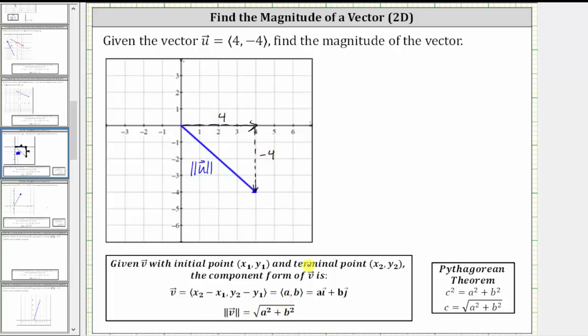And then using our formula here below, the x component is a and the y component is b, which means the magnitude of vector u is equal to the square root of a squared plus b squared, which in our case is equal to the square root of four squared plus the square of negative four. Simplifying, we have the square root of 16 plus 16, which is equal to the square root of 32.